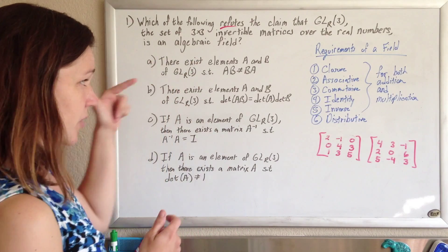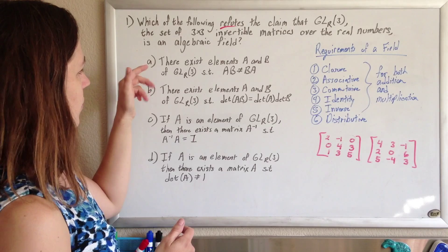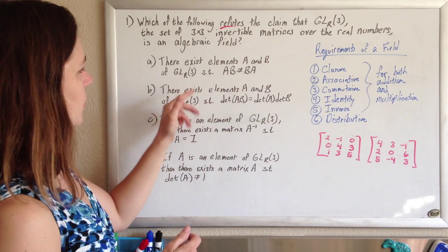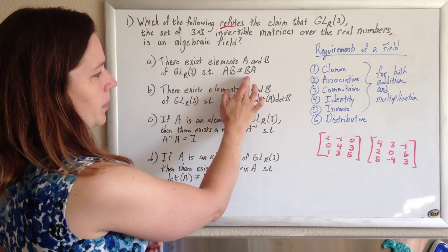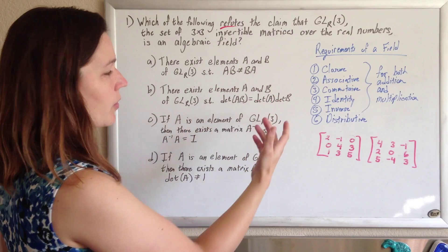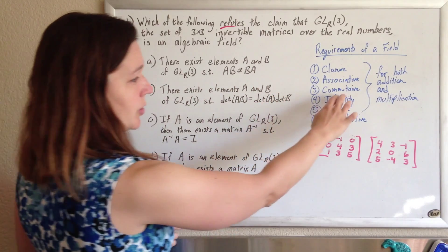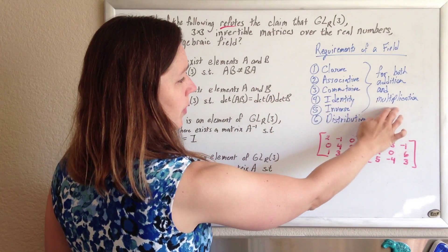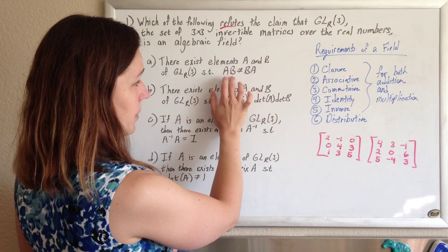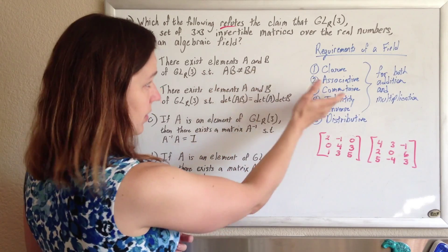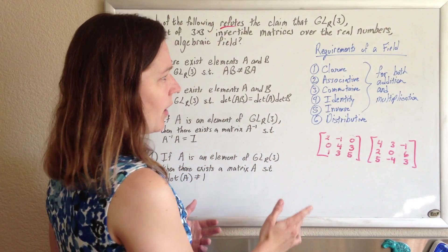So we're a little scared, but we're just going to attack and go down the list. For answer A: there exist elements A and B of GL3 such that AB doesn't equal BA. If AB doesn't equal BA, this would be a counterexample for the commutative property of multiplication, and you need the commutative property of multiplication to be a field. So if it's true that there are elements A and B such that AB doesn't equal BA, that would in fact refute the claim that these are a field.